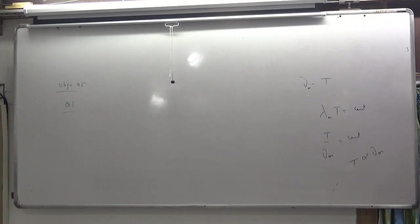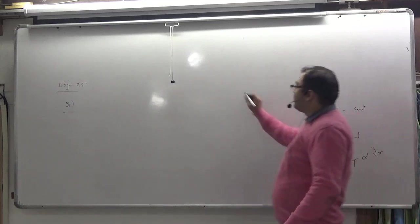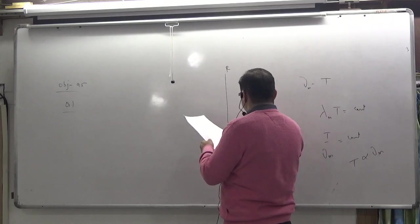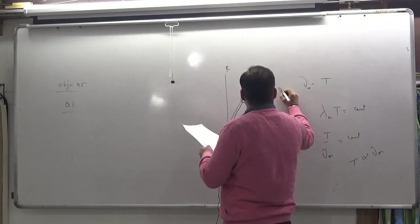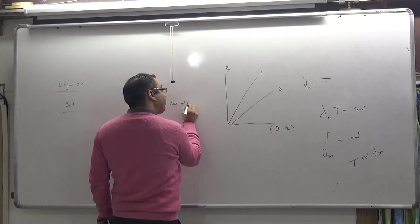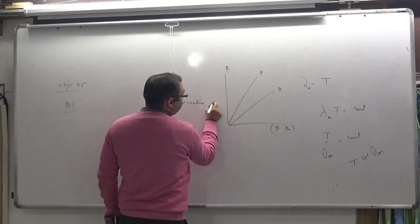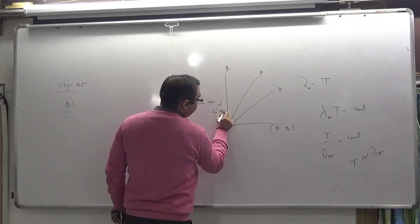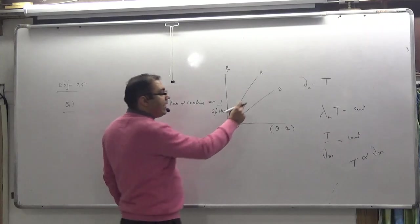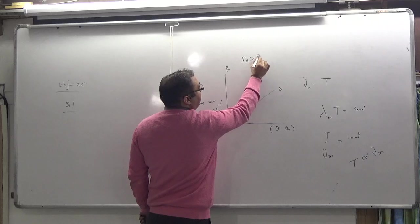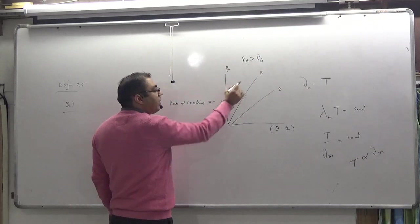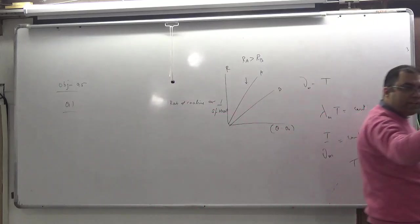There is a question in which you have rate of cooling and temperature difference, and two curves are given — one A and one B. I have told you that the rate of cooling is inversely proportional to specific heat. So whichever has a greater rate of cooling will have a smaller specific heat. Rate of cooling is inversely proportional to specific heat.